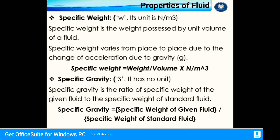Specific weight is denoted by the symbol small w and its unit is Newton per meter cube. Specific weight is the weight possessed by a unit volume of a fluid. Specific weight varies from place to place due to changes in acceleration due to gravity, and the formula is specific weight equals weight divided by volume. Specific gravity is denoted by the symbol S and has no unit. Specific gravity is the ratio of the specific weight of the given fluid to the specific weight of the standard fluid.